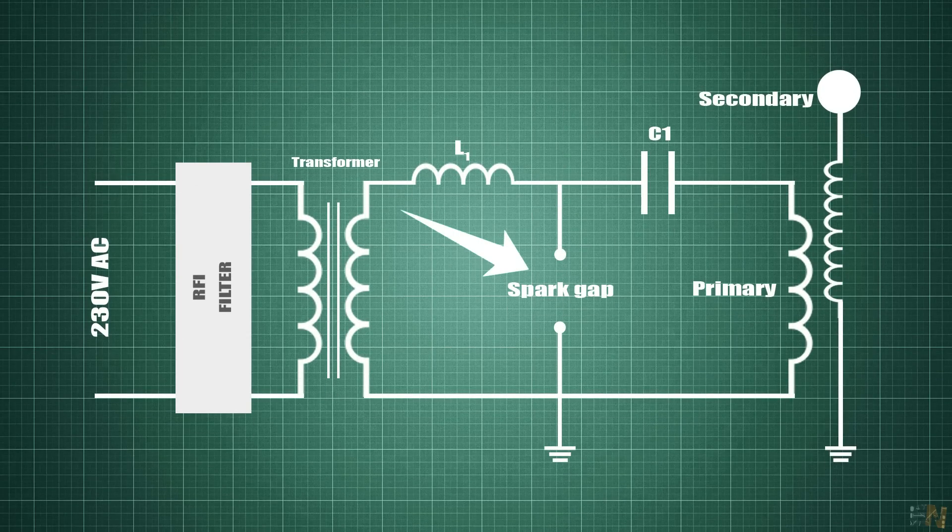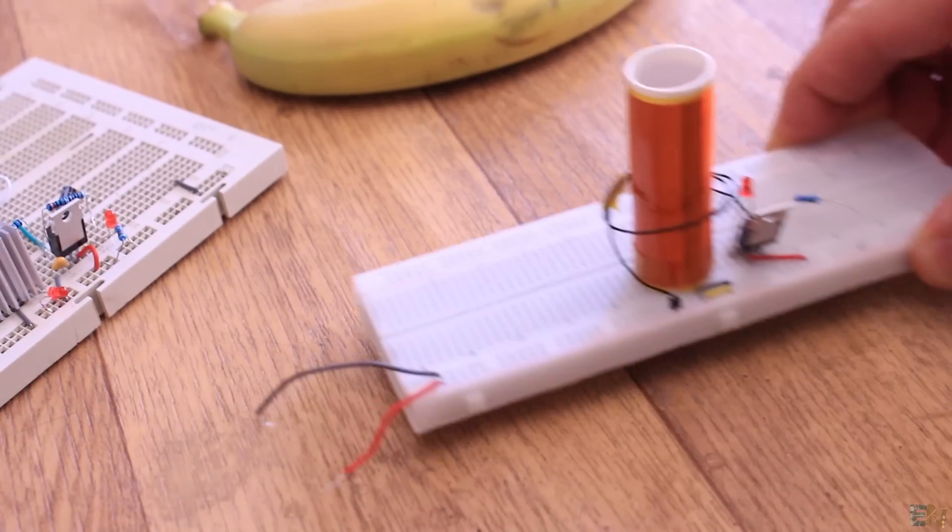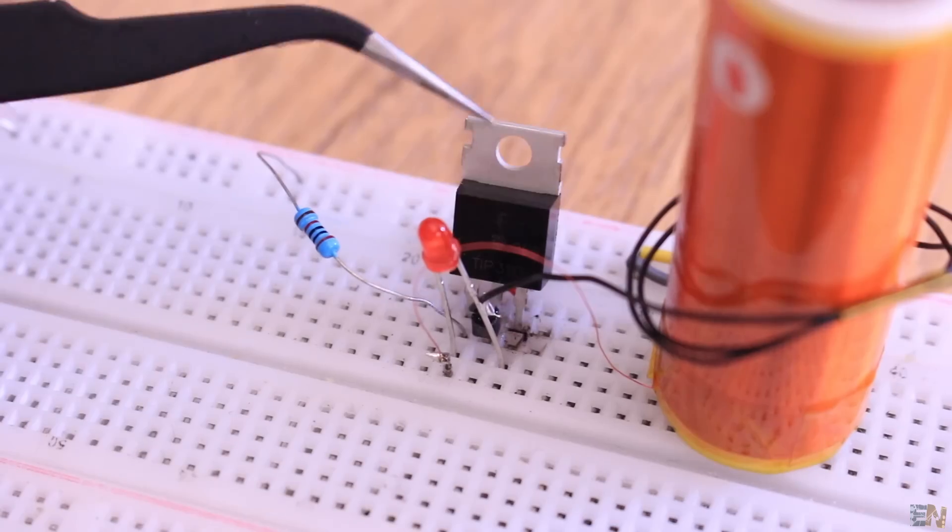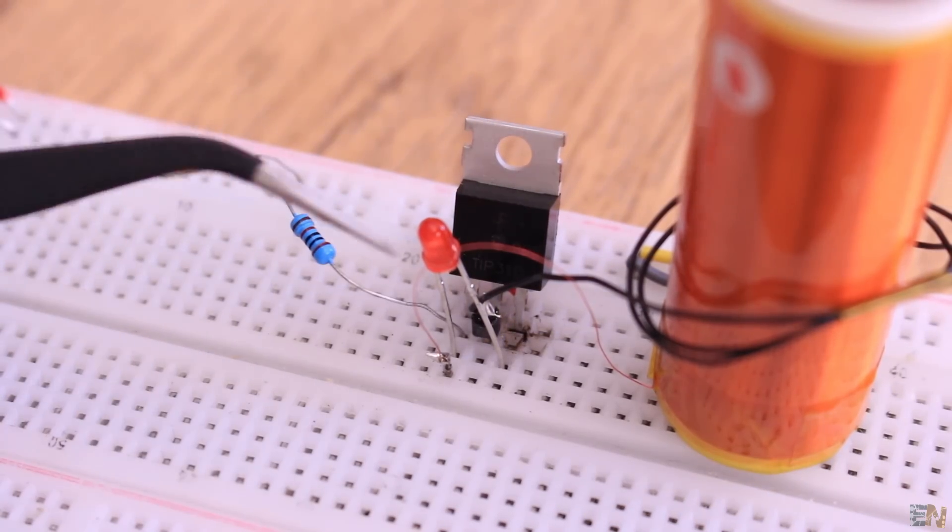Ok, now let's take a look at the Slayer exciter circuit and see how this one works. Remember that for this circuit we only had a BJT transistor, a resistor and a diode.